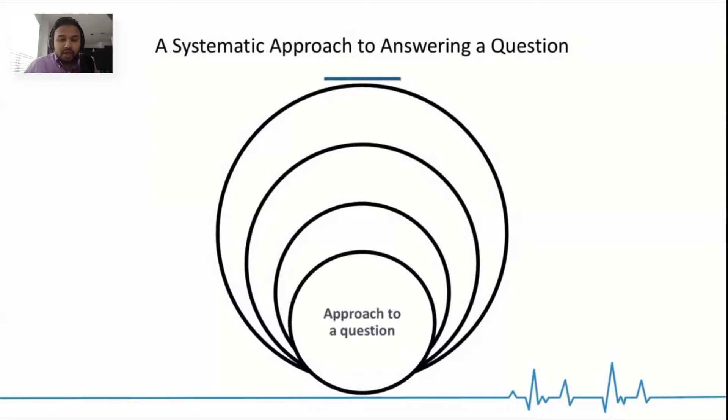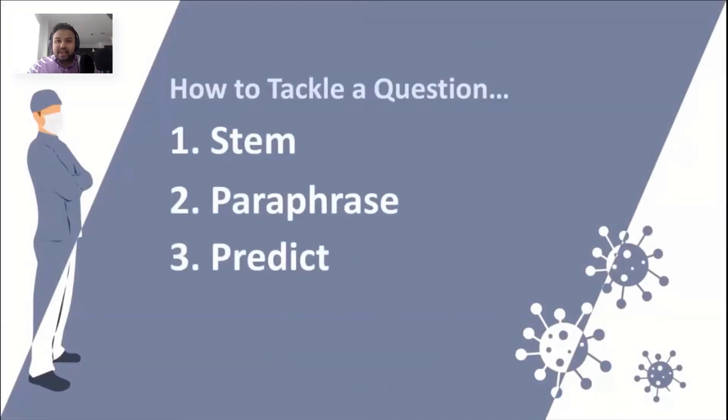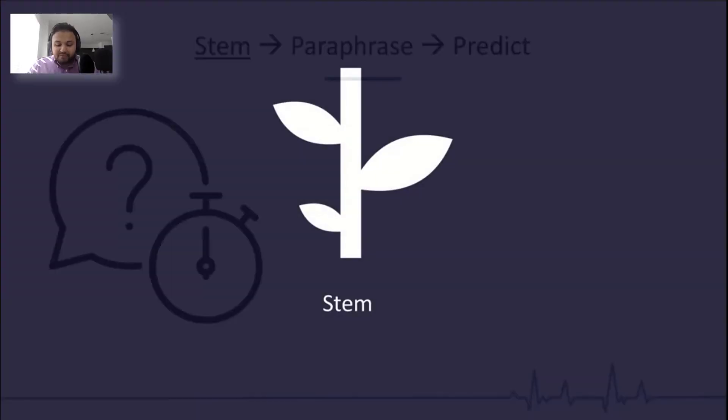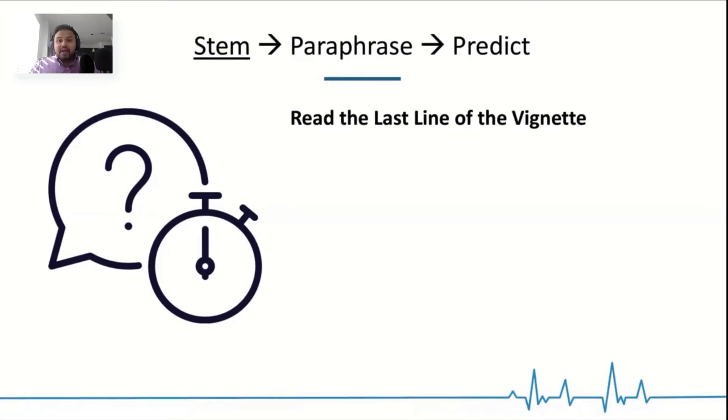STEM. When I'm thinking about STEM, paraphrase, and predict, if I break it down, the STEM of the question is what I read first. And that is basically the last line of the vignette. I look at the last line of the vignette and I say, alright, what is that last question? What is that last line? Because it's going to prime myself to the whole vignette.